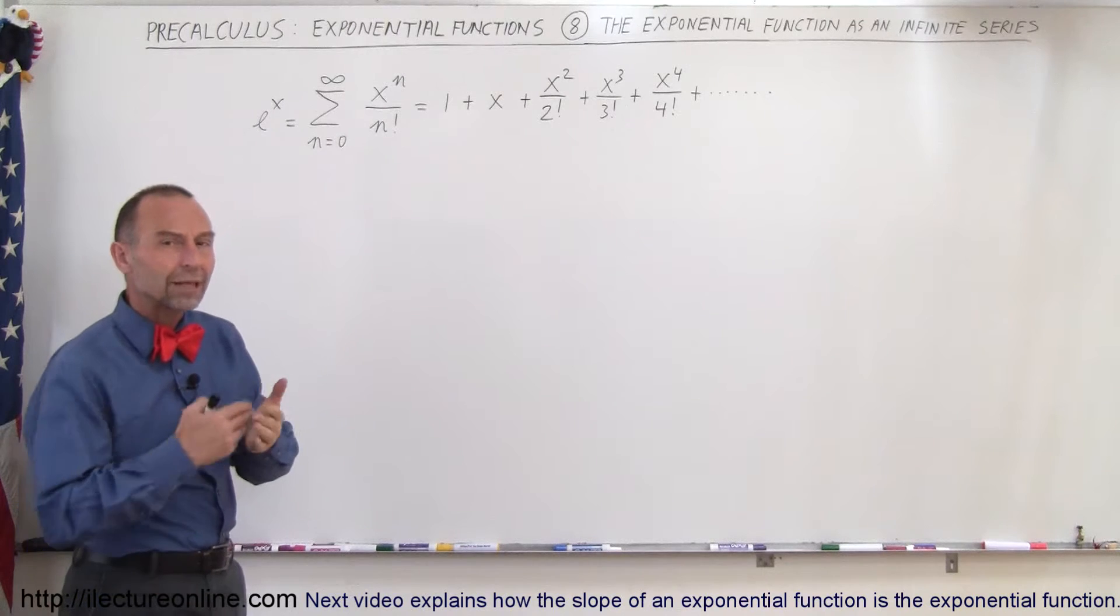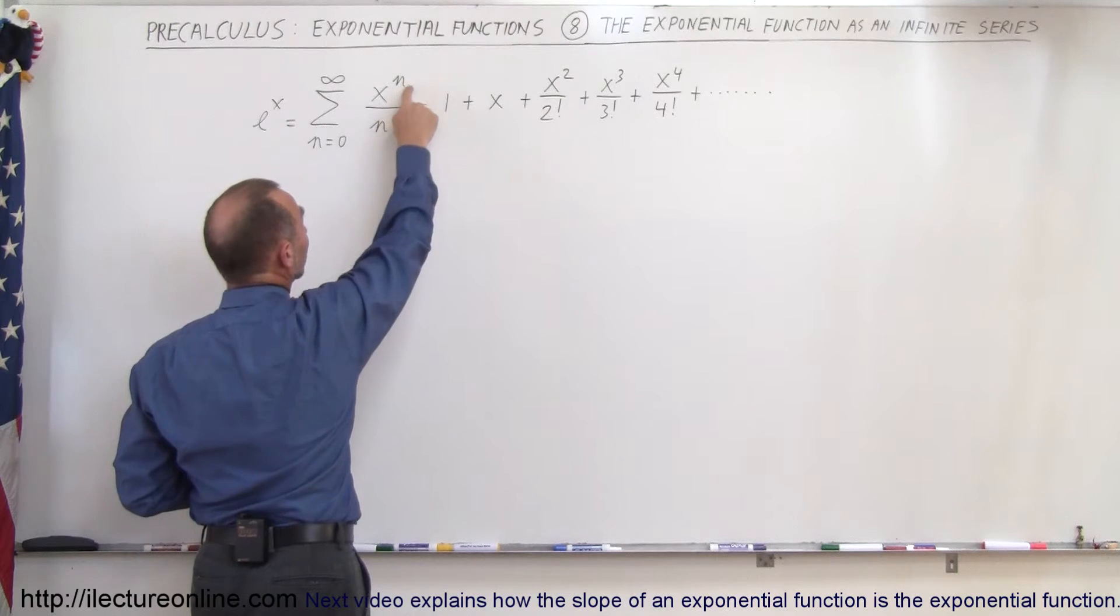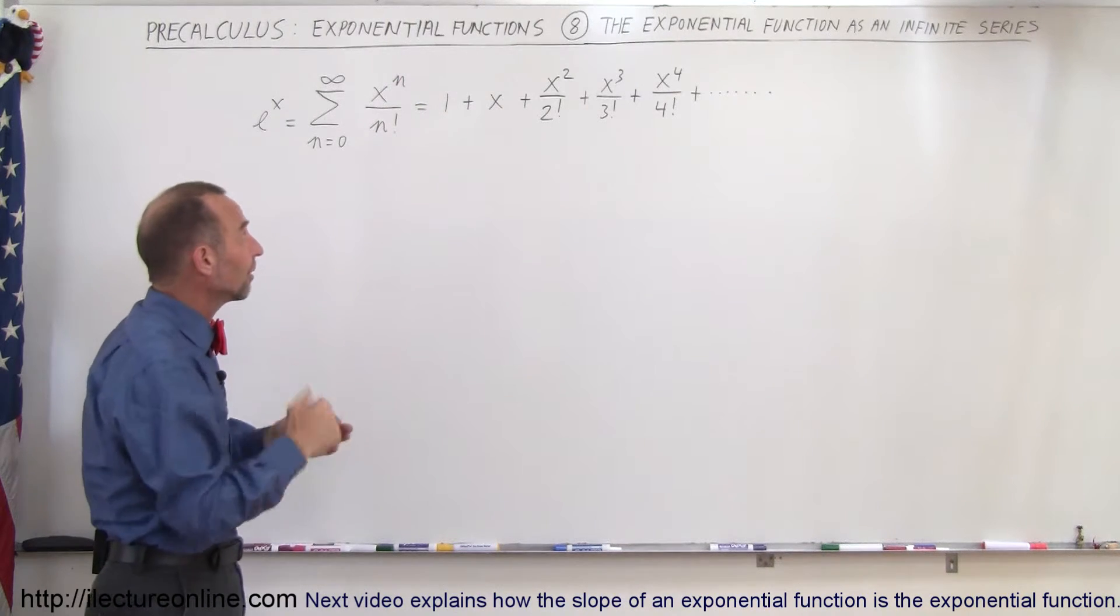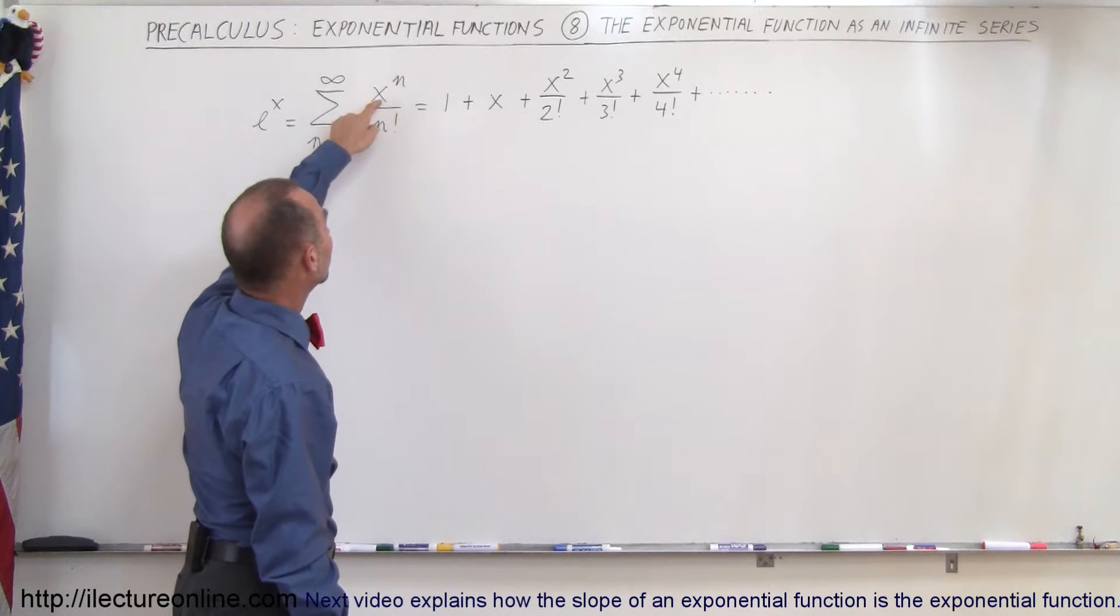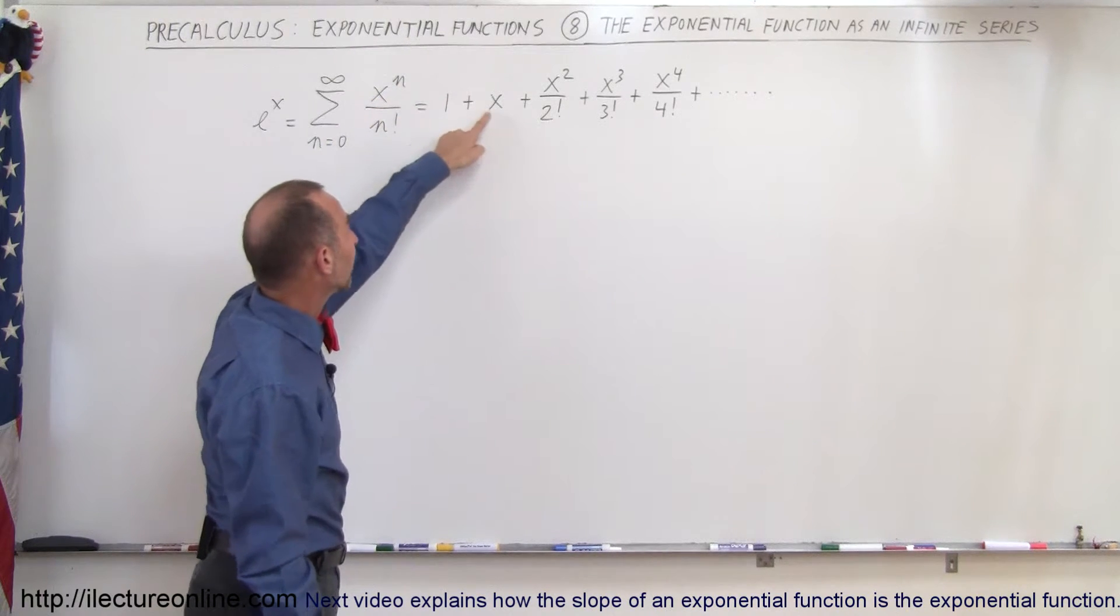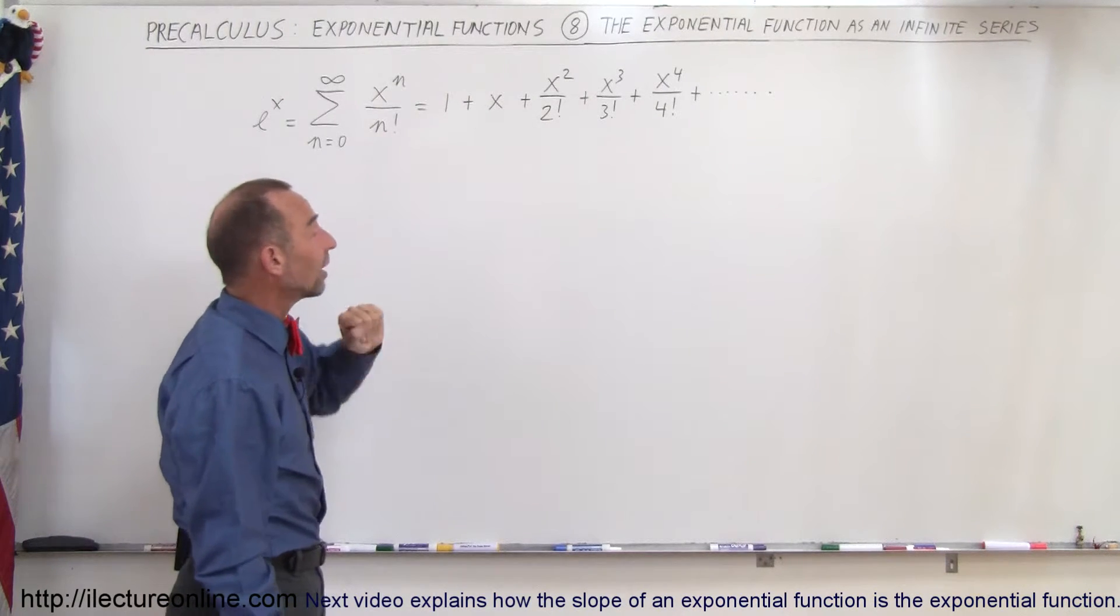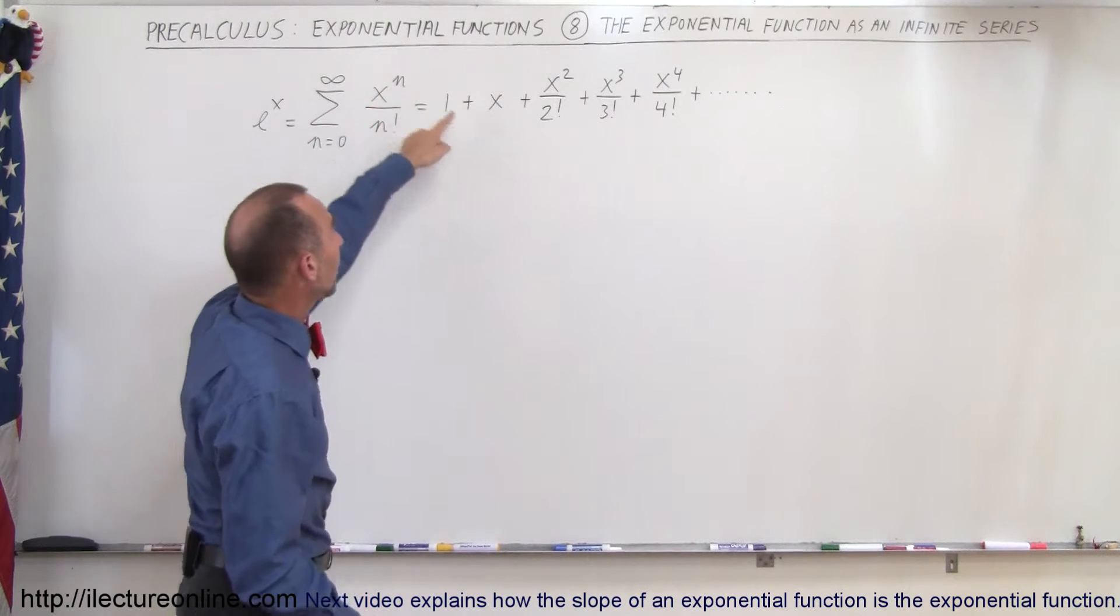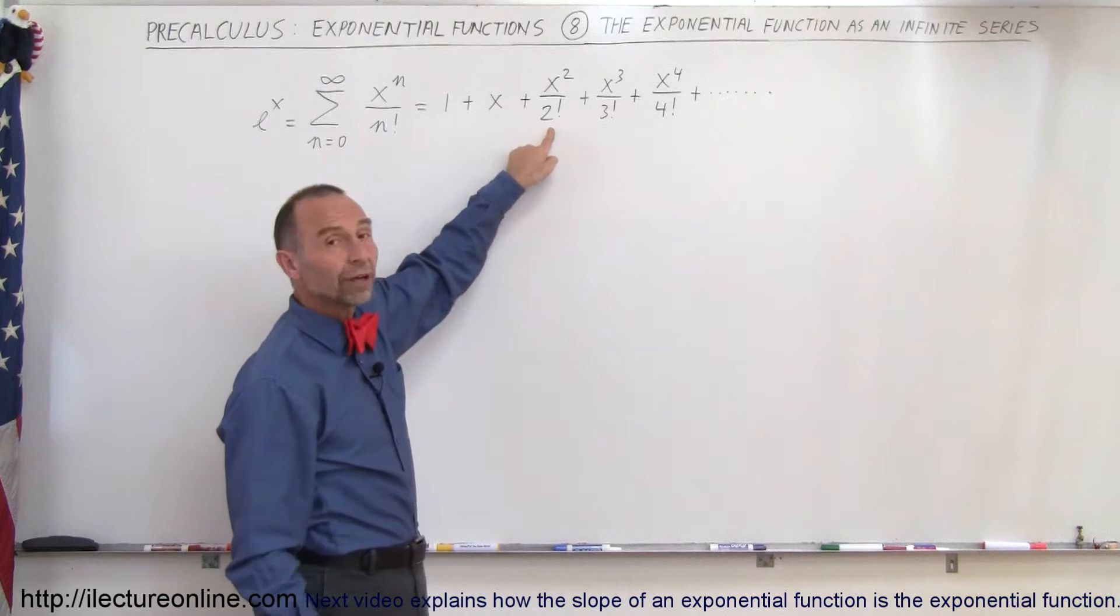When we write that out, notice when n equals 0, x to the 0 power would be 1, and 0 factorial is 1 by definition, so 1 divided by 1 would be 1. When n becomes 1, x to the 1 power is simply x, and 1 factorial is still 1, so it would be x divided by 1, which is x. When n becomes 2, x to the second power is x squared, and 2 factorial would be 2 factorial.